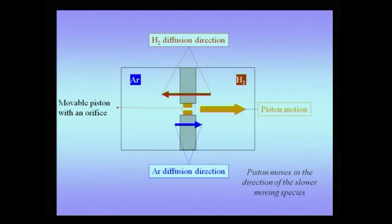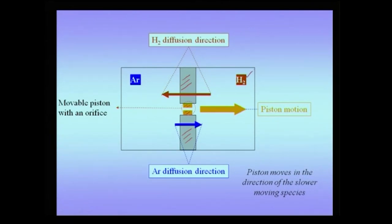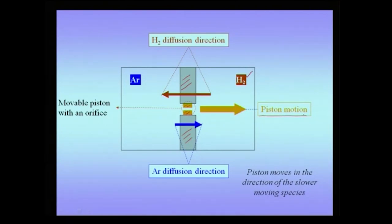Let us start with a gaseous example, though we are going to focus only on diffusion in crystalline materials. Suppose we consider a large chamber split into two parts using a hard wall shown here in gray color, and a movable piston right at the center shown in orange. One side has a gas like argon; the other side has a lighter gas like hydrogen, which can diffuse faster. When the connection is made between the two sides, argon will diffuse from left to right and hydrogen will diffuse from right to left, but the rate of diffusion of hydrogen will be higher. Therefore, the orange-colored piston will move towards the right — that is, towards the slower diffusing species.